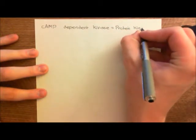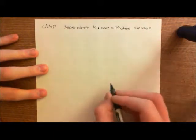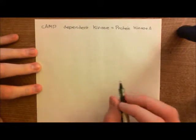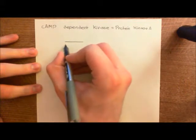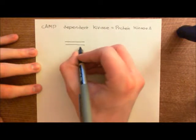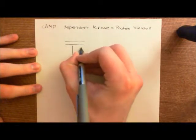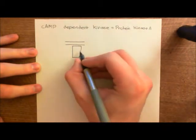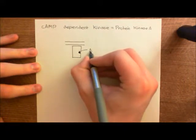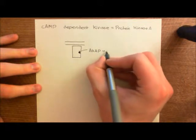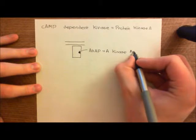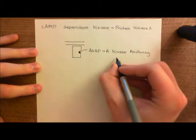There are two forms of protein kinase A enzymes: type 1 and type 2. The difference is that type 2 protein kinase A is going to be bound to certain proteins which are bound to the phospholipid bilayer. These proteins bound to the inner leaflet of the phospholipid bilayer are known as AKAPs — A-kinase anchoring proteins — and type 2 protein kinase A will bind to them, whereas type 1 protein kinase A will be free within the cytoplasm.